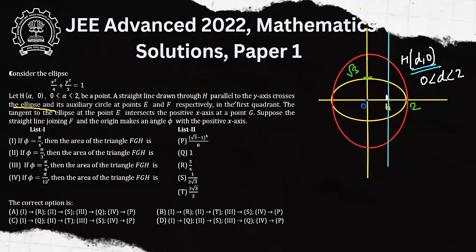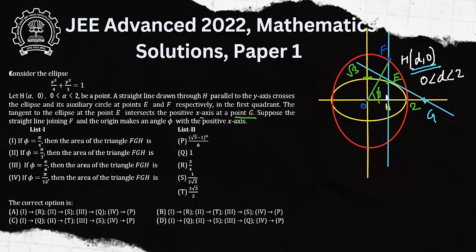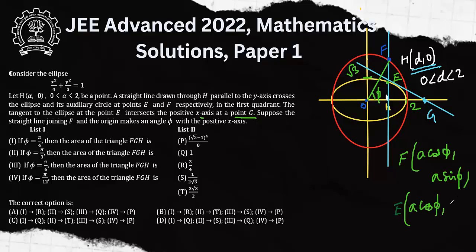This vertical blue line intersects the ellipse at E and the auxiliary circle at F. Using the eccentric angle φ, the coordinates of F are (a cos φ, a sin φ) = (2 cos φ, 2 sin φ), and the coordinates of E are (a cos φ, b sin φ) = (2 cos φ, √3 sin φ).